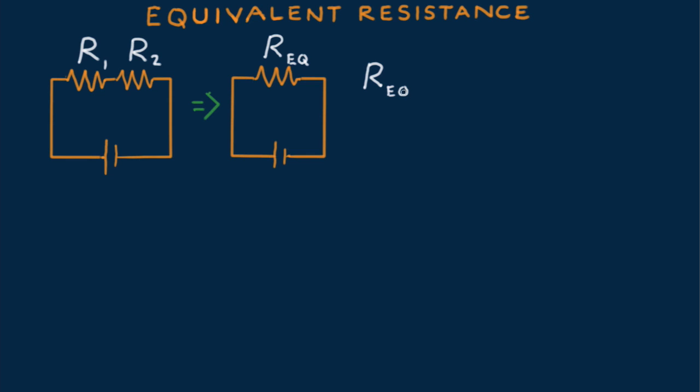For a series circuit, R sub-equivalent is simple enough. It's the sum of the individual resistors because the same current has to pass through each of them in turn. Resistances add. Suppose R sub 1 were 4 ohms and R sub 2, 6 ohms. Then the equivalent resistance is 4 ohms plus 6 ohms equals 10 ohms. The amount of current in the circuit would be the same as if the two resistors were replaced with a single resistor of 10 ohms. The battery wouldn't know the difference.